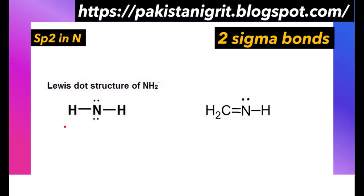We have sp2 hybridization in nitrogen when it has two sigma bonds. In this example, this nitrogen has two sigma bonds, so its hybridization is sp2. This other nitrogen also has two sigma bonds — one with this carbon and one in this direction.